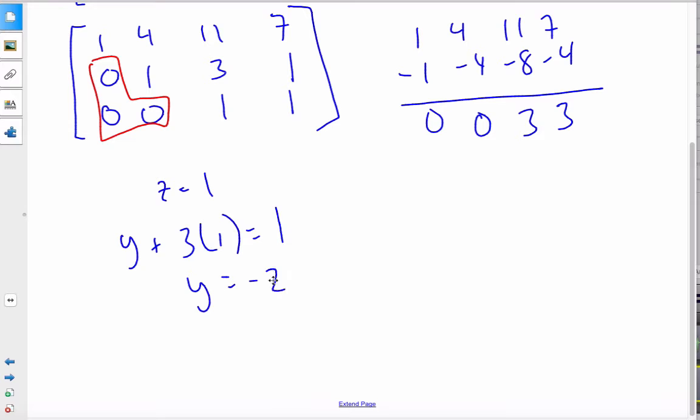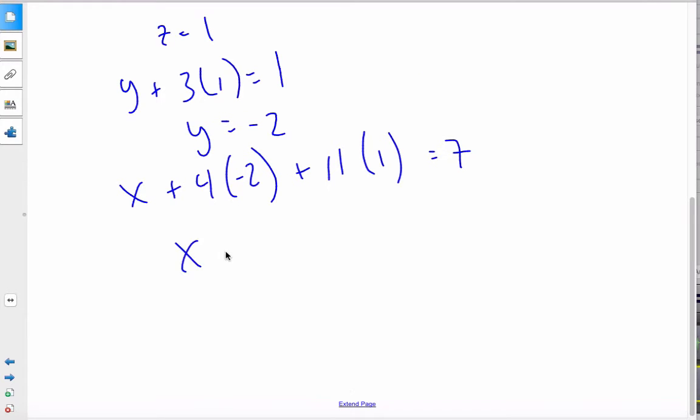And finally, the last line says x plus 4y, which is negative 2, plus 11z, which is 1, equals 7. So x minus 8 plus 11 is 7. x, and this is plus 3, is 7. So x is equal to 4.